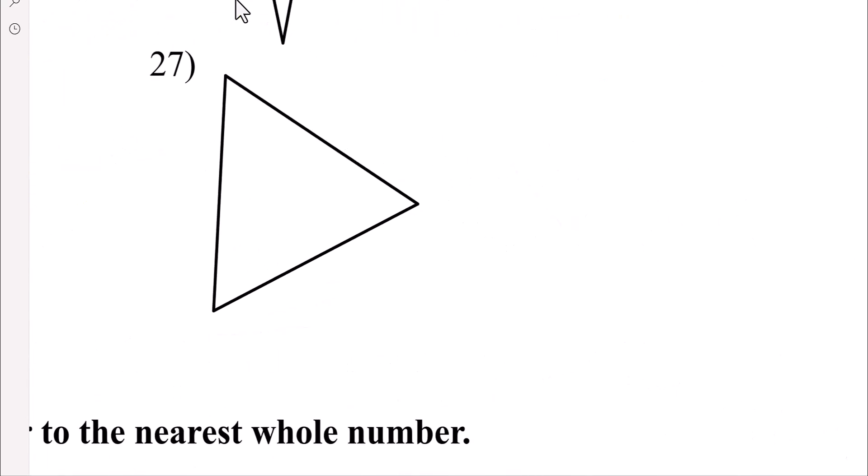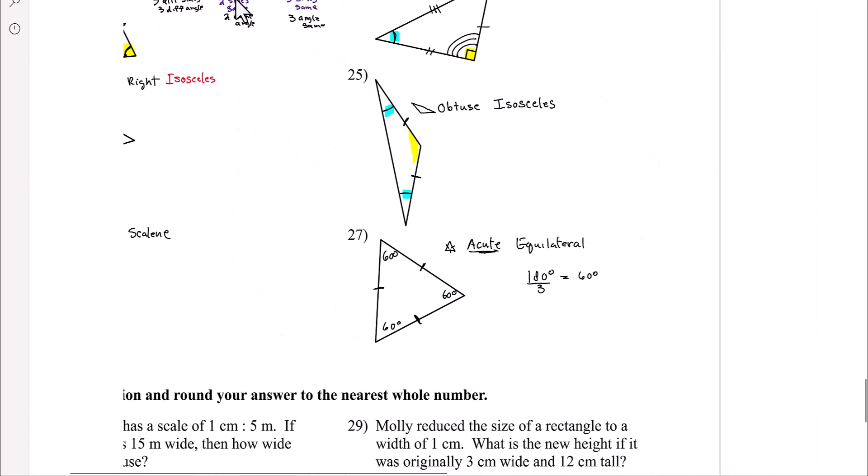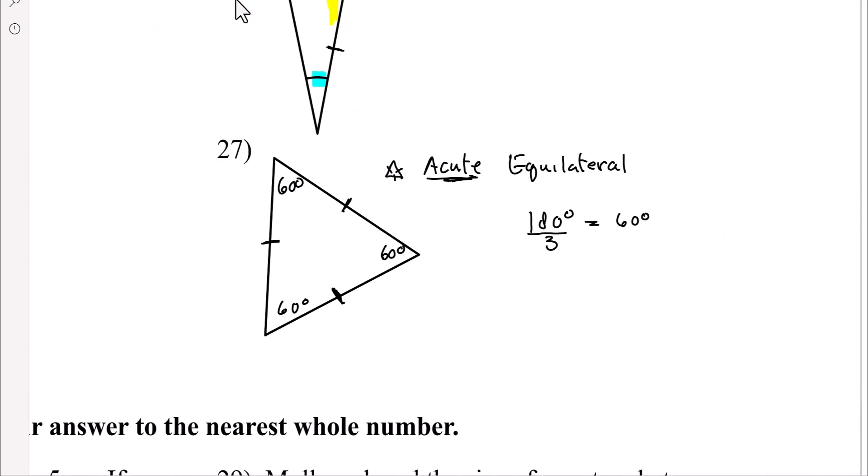And then it doesn't have the markings. All the angles. So we could say acute scalene. But I think what they want is to recognize those sides all look the same. So this would be, and by the way, all equilateral triangles must be acute. Because a triangle has 180 degrees, and if all three angles are the same, divide that by three, all three angles are 60 degrees, which all three angles are less than 90. So acute equilateral triangle. All right. So this is how you classify triangles by their angles and their sides.